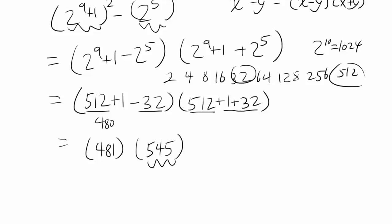And this thing is obviously divisible by 5. So let's do that. You have 481 times 5 times 109. So I'm splitting 545 into 5 times 109.